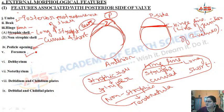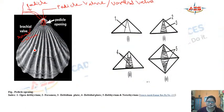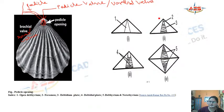The foramen is a circular or semi-circular opening on the pedicle valve (ventral valve) for the passage of the pedicle. This circular opening is known as the foramen.